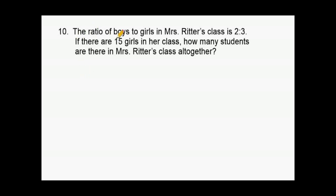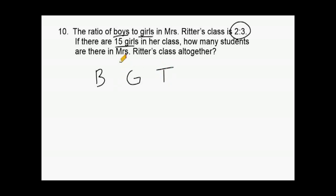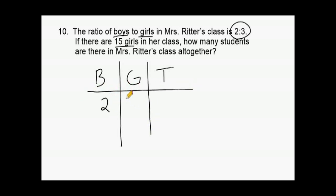This problem reads that the ratio of boys to girls in Mrs. Ritter's class is 2 to 3. If there are 15 girls in the class, how many students are there altogether? In the ratio table with boys (B), girls (G), and total (T): the given ratio is 2 boys and 3 girls per group, totaling 5. Since there are 15 girls, we examine the relationship from 3 to 15, which is an increase by a factor of 5.